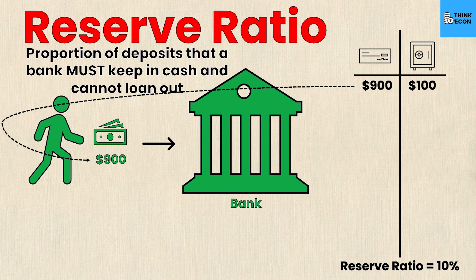That person comes to the bank with $900 — a loan derived from your original deposit — and deposits it, possibly at the same bank or a different one. Again, 10%, or $90, goes into the vault, and the remaining 90%, or $810, can then be loaned out.